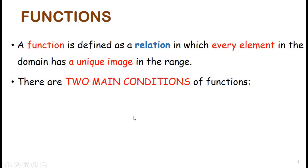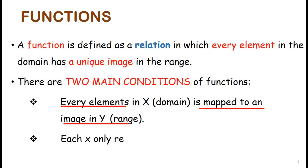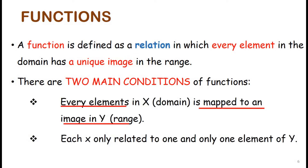Now, what is a function? A function is defined as a relation in which every element in the domain has a unique image in the range. There are two main conditions: first, every element in X is mapped to an image in Y; second, each X is related to one and only one element of Y.